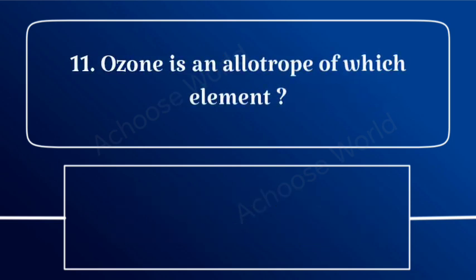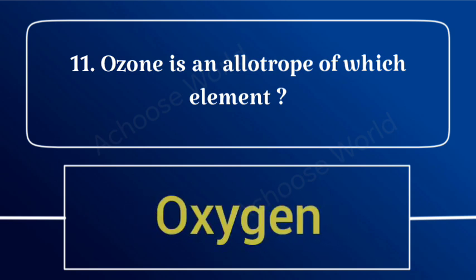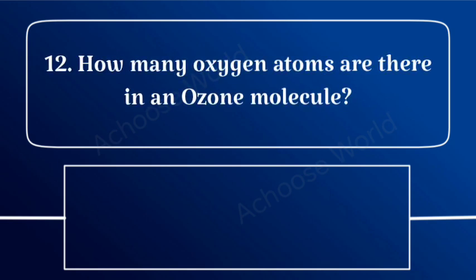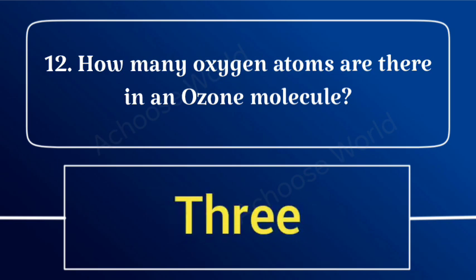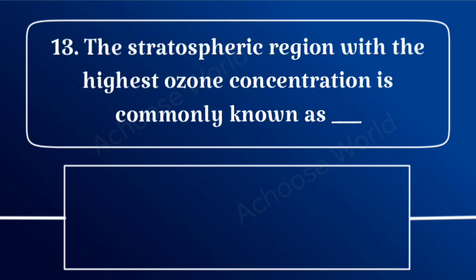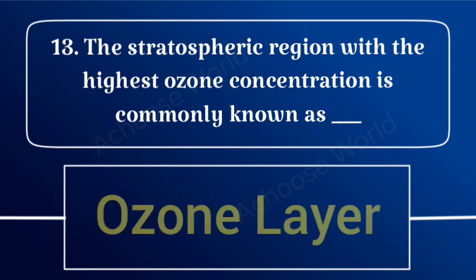Ozone is an allotrope of which element? Oxygen. The stratospheric region with the highest ozone concentration is commonly known as the Ozone Layer.